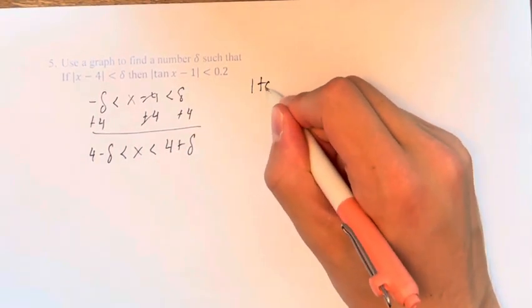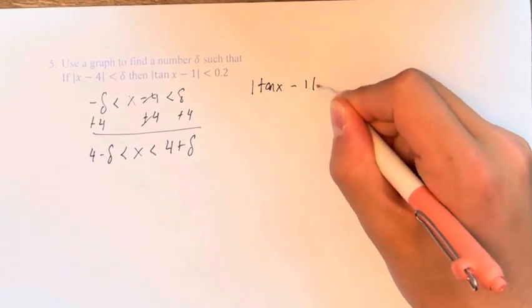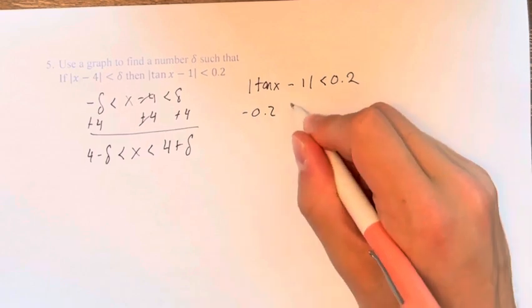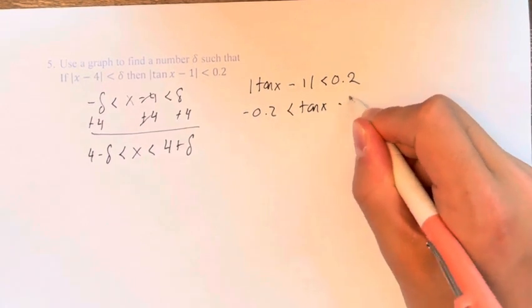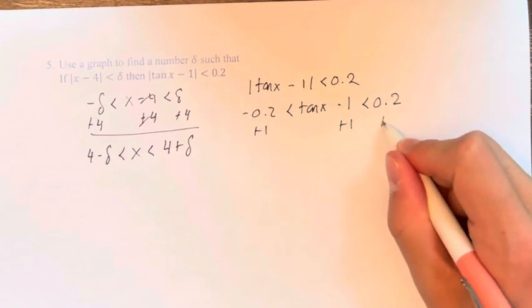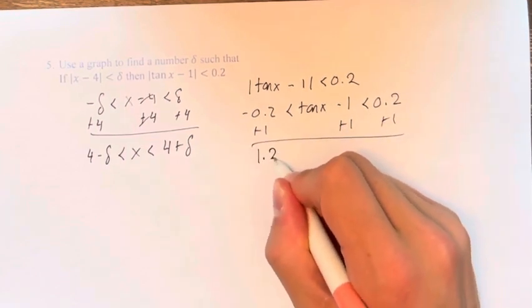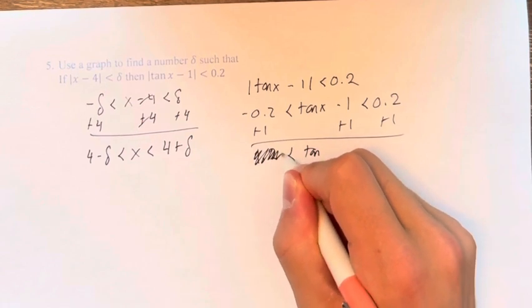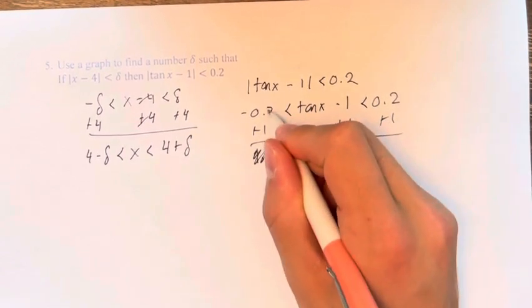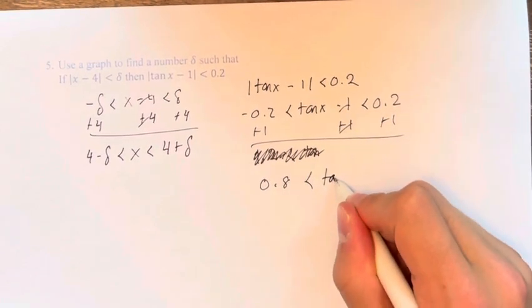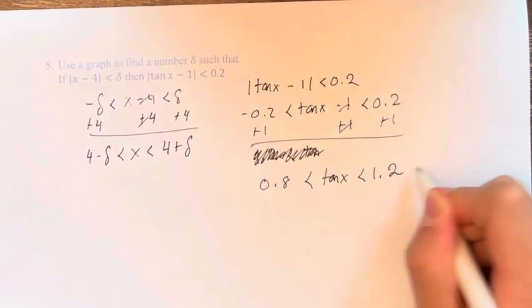Next we have the absolute value of tangent of x minus 1 is less than 0.2. This means that it's greater than negative 0.2 and less than positive 0.2. And if we add 1, we get 0.8, negative 0.2 plus 1, 0.8 is less than tangent of x, which is less than 1.2.